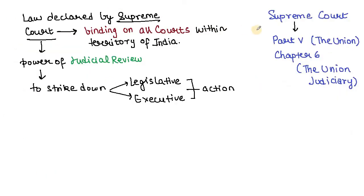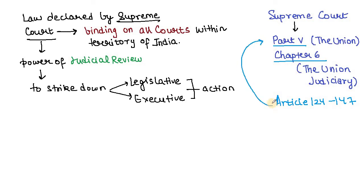The Supreme Court is under Part 5 (the Union) and Chapter 6 (the Union Judiciary) of the Constitution. Articles 124 to 147, included in Part 5, deal with the organization, independence, jurisdiction, powers, and procedures of the Supreme Court. As per Article 124, there shall be a Supreme Court of India consisting of the Chief Justice of India.